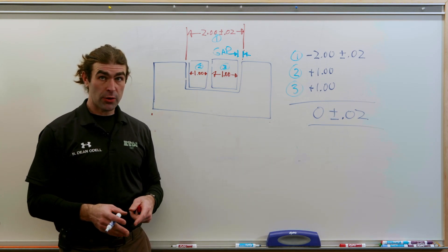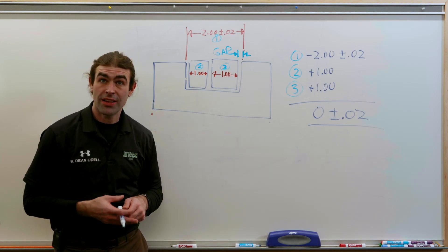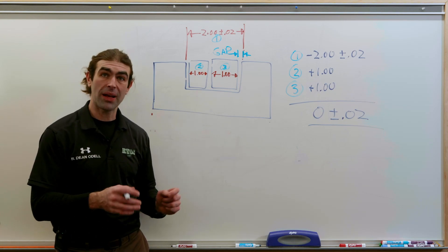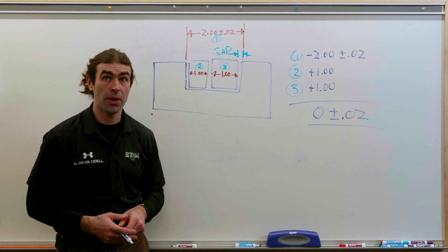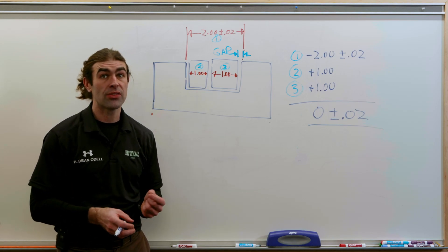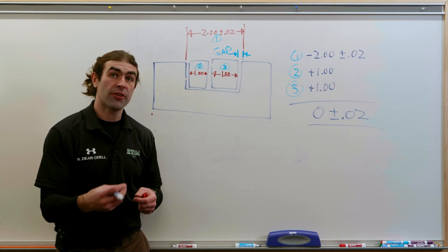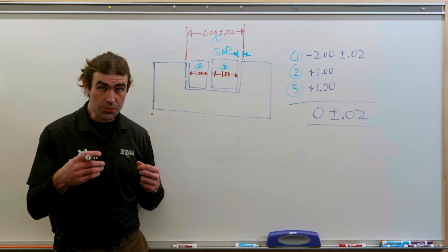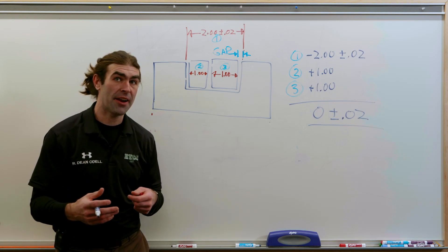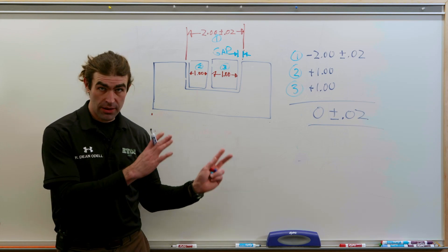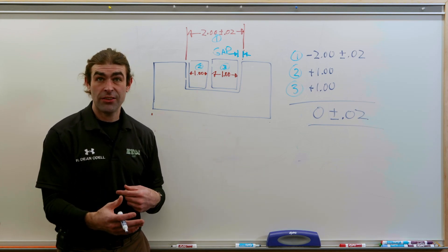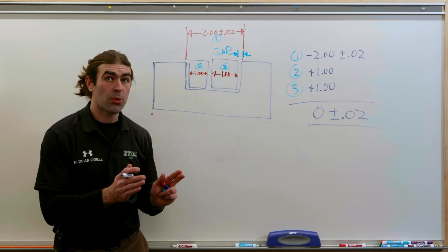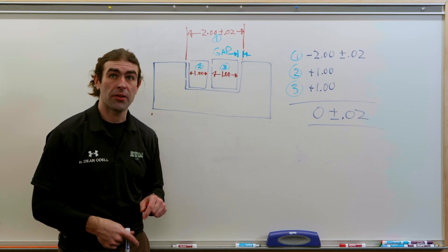Now, it won't fit at worst case, but now it's only 20 thousandths off. So, we could change the nominals less to achieve that just by changing the dimensioning scheme. So, whenever you're applying dimensions, you want to think about how the thing is going to function with other parts, and apply the dimensions directly to features that matter, not indirectly. So, the way I did it, the first example was indirect for this assembly.